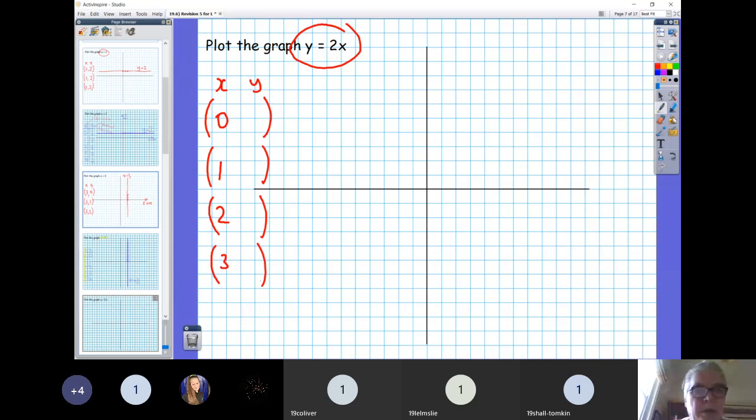So y is 2 lots of x, so we just double our x coordinate. So 0, 2, and doubling 2 we get 4, doubling 3 we get 6. So 0, 0, 1, 2, 2, 4, and 3, 6. Just check they're in a straight line and then just fill in and then get your ruler out and do the straight line. And that is y equals 2x.